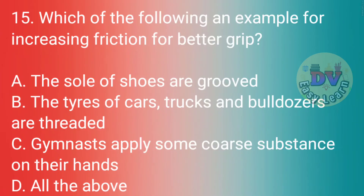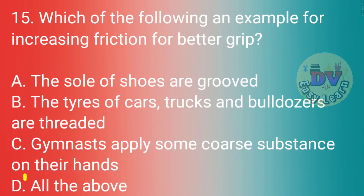Q15. Which of the following is an example of increasing friction for better grip? Correct answer: All the above — the sole of shoes are grooved; the tyres of cars, trucks and bulldozers are threaded; gymnasts apply some coarse substance on their hands.